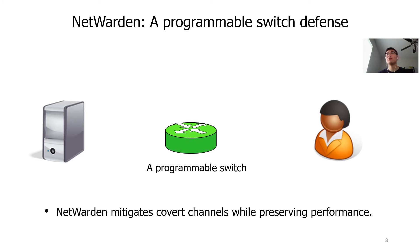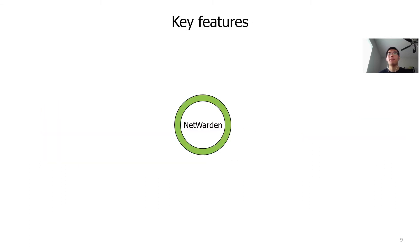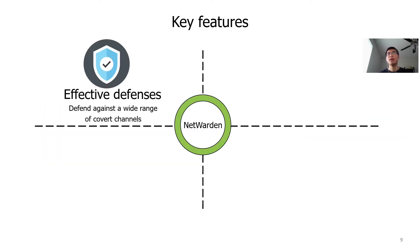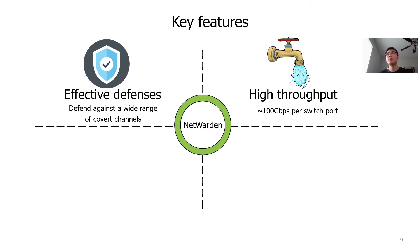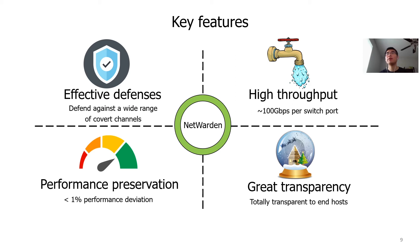In Netwarden, we turn a programmable switch into a defense platform. Netwarden is located in the middle between the protected server and user. It works as a TCP proxy, but the major duty is to mitigate covert channels. It tracks all passing-through traffic to detect and mitigate covert channels in real-time. More importantly, Netwarden can preserve TCP performance. Netwarden has several key features: it can effectively mitigate both covert storage and timing channels, achieve 100 Gbps throughput per switch port, preserve TCP performance with no more than 1% performance penalty for both channels, and is totally transparent to any host.